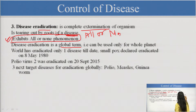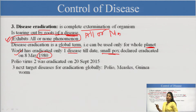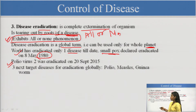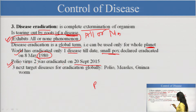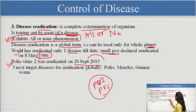Which disease has the world eradicated? The world has eradicated one disease till date — smallpox. In 1980, the world declared that no country has this disease anymore. Poliovirus is also being targeted. Poliovirus has different strains: poliovirus 1, 2, and 3. Poliovirus 2 was eradicated in 2015, but poliovirus 1 and 3 remain. We are targeting to eliminate all of these and ultimately put it into eradication.